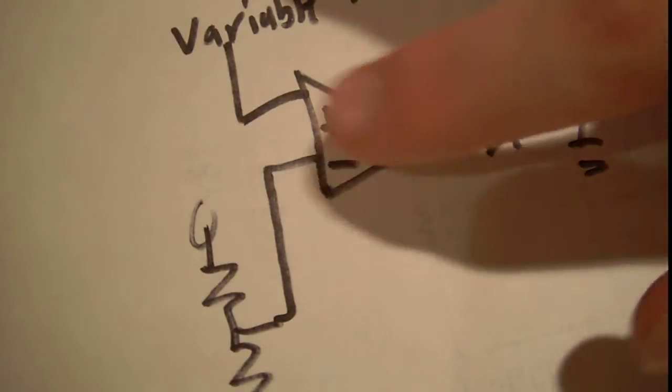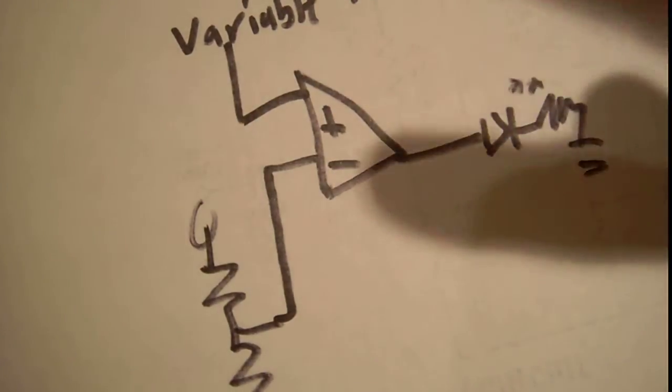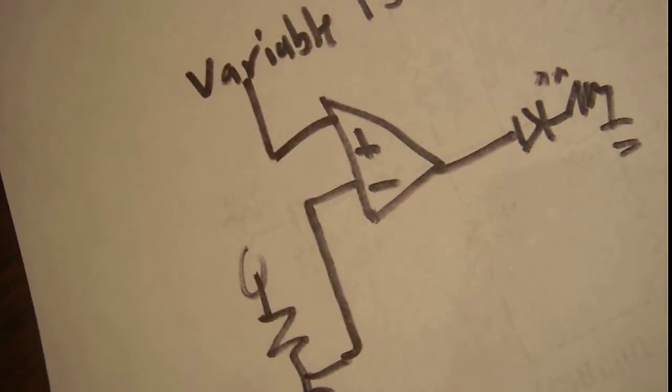Basically, when neither of those is hooked up through any loop to the output of the op-amp, the op-amp sort of turns into a comparator.